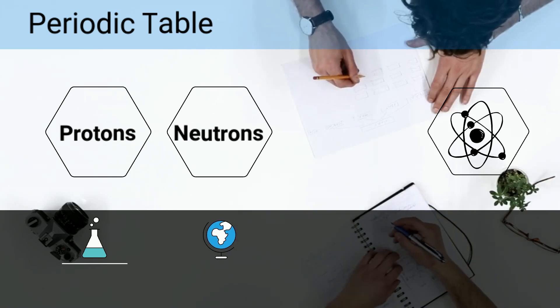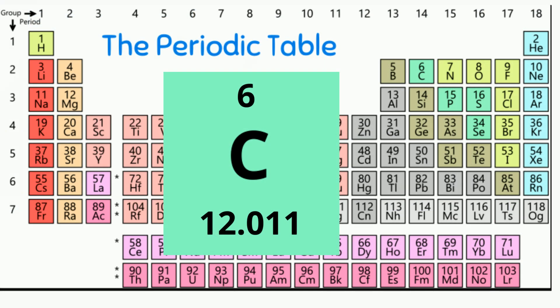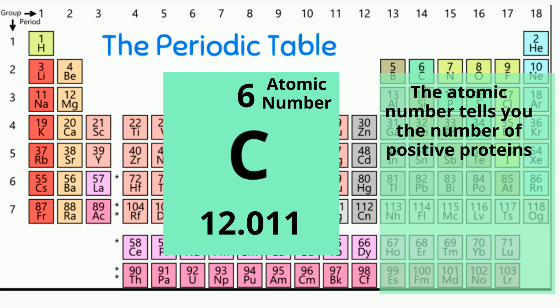Now, let's focus on the number of protons, neutrons, and electrons for carbon. The number above the atomic symbol is called the atomic number. In this case, for carbon, it's 6. So it tells you that carbon has 6 protons.